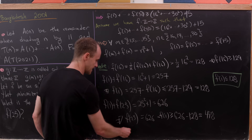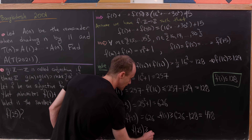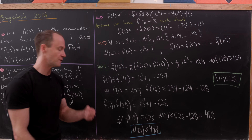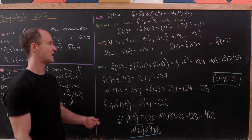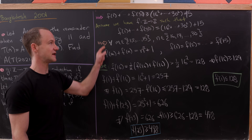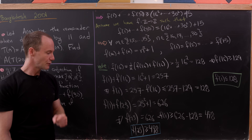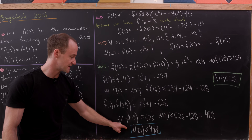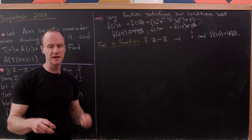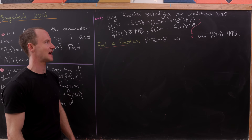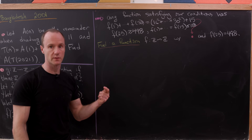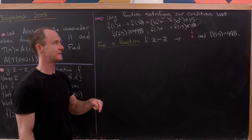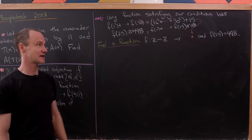So we have f(25) ≥ 498 as a minimum possible value, assuming our function achieves the minimum sum. We've shown: any minimizing function satisfies f(1) + … + f(30) = 16² + … + 30² + 15, f(25) ≥ 498, and f(1) = f(2) = … = f(15) ≤ 128. Now we need to construct an actual adjective function achieving f(25) = 498.